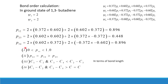P12 equals P34 (both 0.896), and this value is greater than P23 (0.448), which means the terminal bonds C1–C2 and C3–C4 have more double bond character than the central bond C2–C3. The terminal carbon pairs are more tightly bonded compared to the second and third carbon atoms.